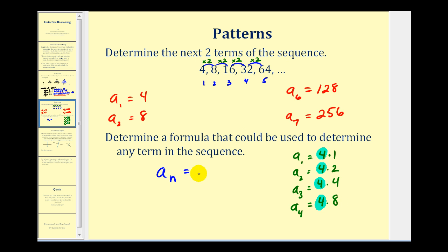So one possible formula would be four times two raised to some power involving n. So if we try two raised to the nth power, this actually doesn't work, because if n is equal to one, that references the first term, we'd have four times two to the first, which actually gives us the second term. So if we take our exponent of n and subtract one, the first term, a sub one, would give us two to the one minus one, or two to the zero, and two to the zero is one. That would give us four.